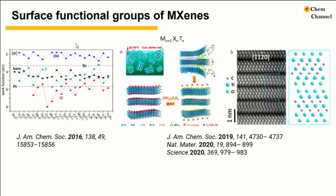Typically, when MXene is etched in acidic solution, the surface termination is a mixture of O, OH, fluorine, or chlorine. In order to produce uniform terminations, a molten salt method was developed. Etching MAX phases in zinc chloride molten salt produces MXenes with exclusive chlorine terminations, such as Ti3C2Cl2 or Ti2CCl2. In a Science paper published in 2020, bromine-terminated MXenes can be obtained by etching MAX phases in molten salt. The bromine groups can be substituted with oxygen, sulfur, selenium, and NH groups, as well as producing defunctionalized MXene surfaces with no functional groups.